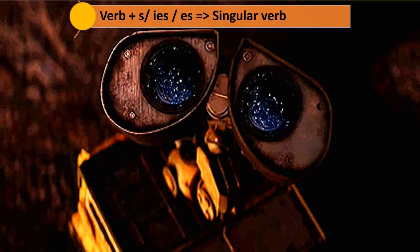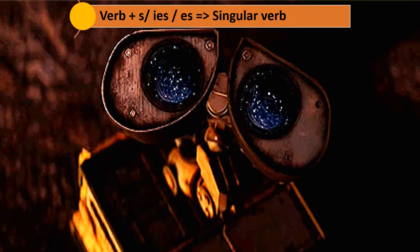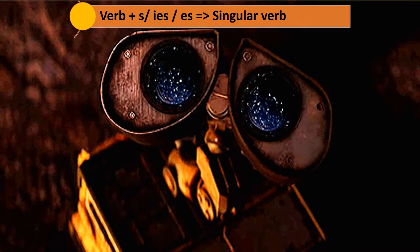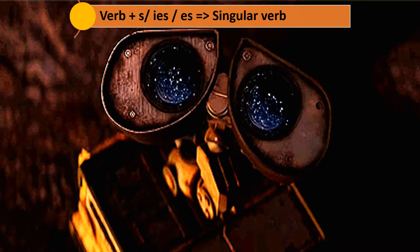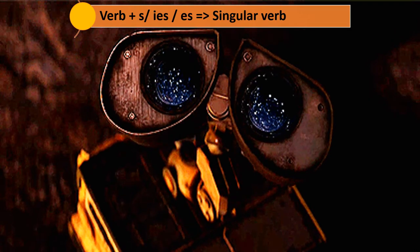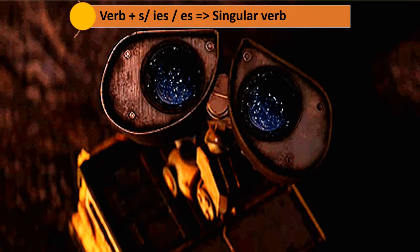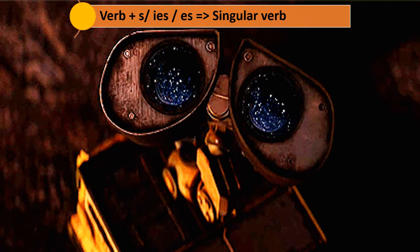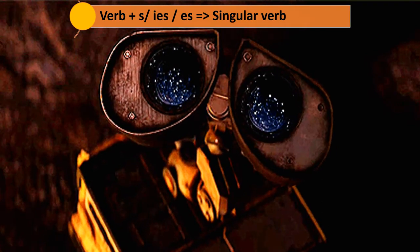But it is opposite in the case of a verb. When we add -s to a verb like 'walk', we get 'walks' — then 'walks' is a singular verb and 'walk' is a plural verb. We have already covered this in the subject-verb agreement chapter.